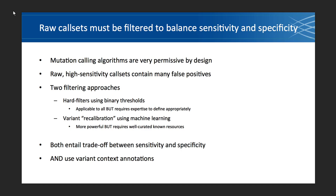We use a different approach called variant recalibration, which uses machine learning. The reason is that you have to look at the numbers in context of your call set — the numbers don't mean the same thing when your call set is large versus small. You don't know in advance what cutoffs to use, and it's hard to devise cutoffs in a meaningful way. Sometimes the regions in the high-dimensional annotation space that you want to keep are not simple enough to define with easy hard filters, so you want something more flexible.